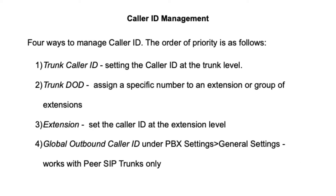Number three is setting the outbound caller ID at the extension level, and number four is setting the global outbound caller ID, which is located under PBX settings under general settings — and this works with peer SIP trunks only.